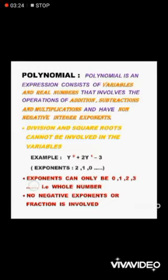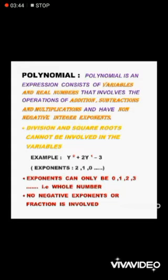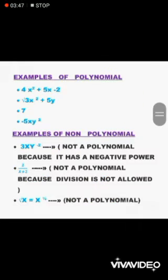An important feature of a polynomial is that the exponents can only be 0, 1, 2, 3, 4 and so on — that is, exponents must be whole numbers. The variables can have exponents from the set of whole numbers, and no negative exponents or fractions are involved. As all the exponents are whole numbers, this expression is a polynomial.